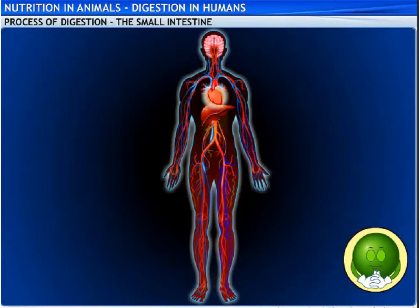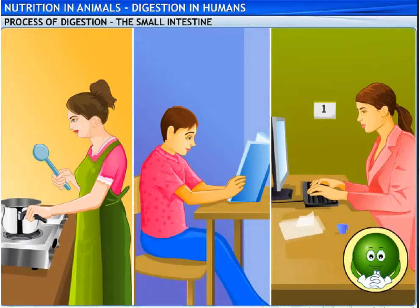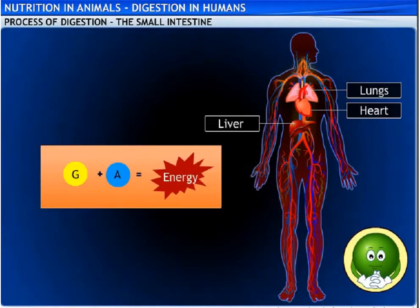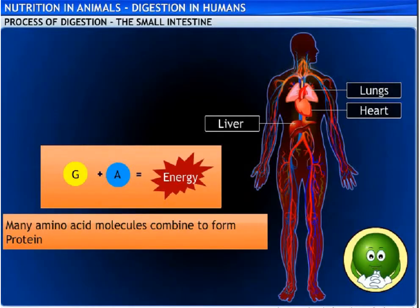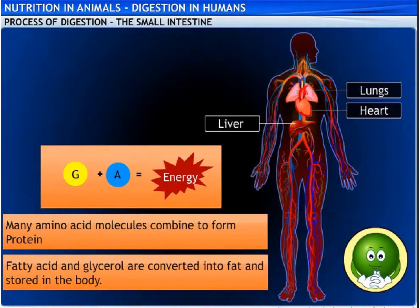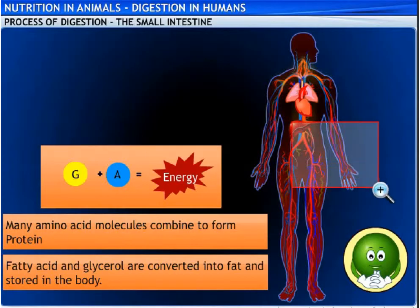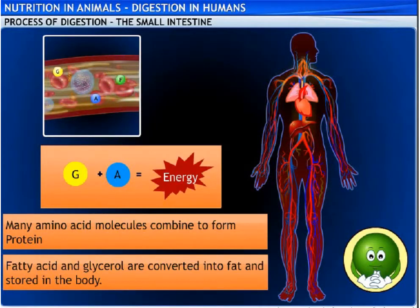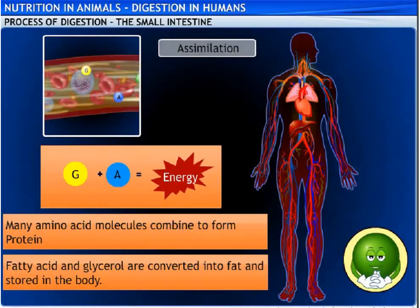The absorbed amino acids and glucose are transported by blood vessels to the liver, while fatty acids and glycerol are taken by the lymph vessels. Together, this process is called absorption. From here, nutrients are sent to various parts of the body according to need. Energy needed for various activities is obtained from glucose, which breaks down with the help of oxygen to release energy in the cell. Amino acids are utilized to form new cells. This process of utilization of absorbed food — glucose, amino acids, fatty acids, and glycerol — is called assimilation.